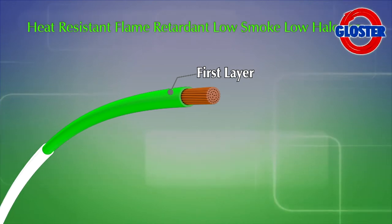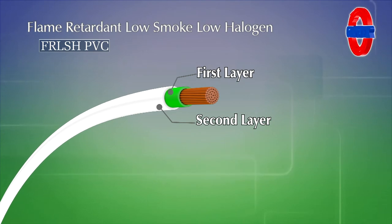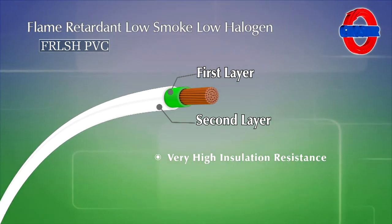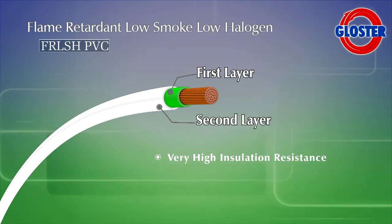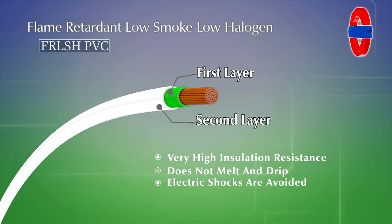Specially formulated in-house flame retardant, low smoke, low halogen PVC is used for second layer which offers very high insulation resistance. Insulation does not burn and drip. Electric shocks are avoided especially during rainy seasons. It saves power.